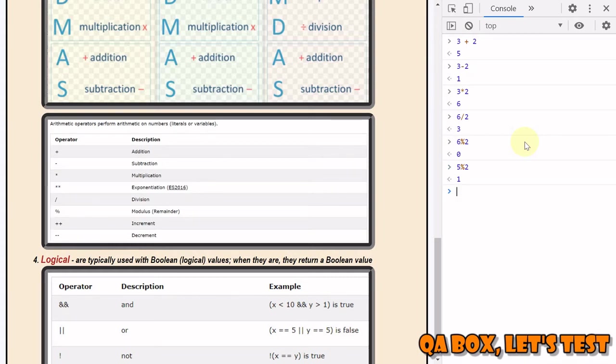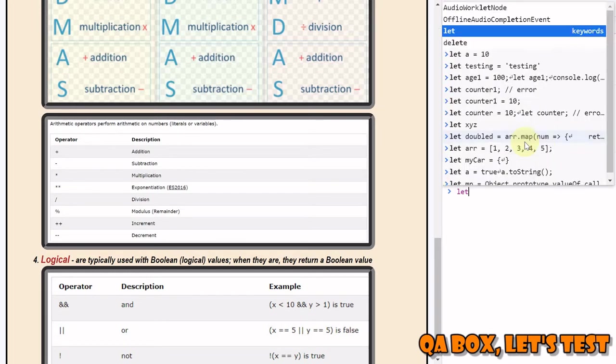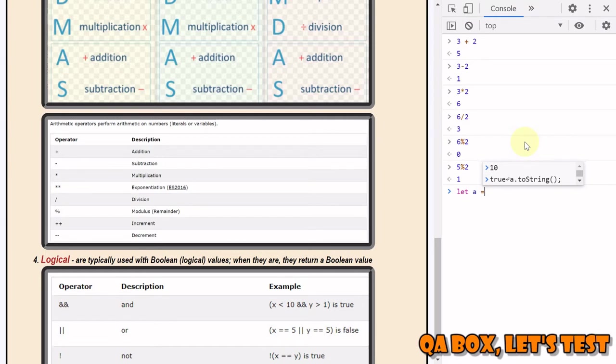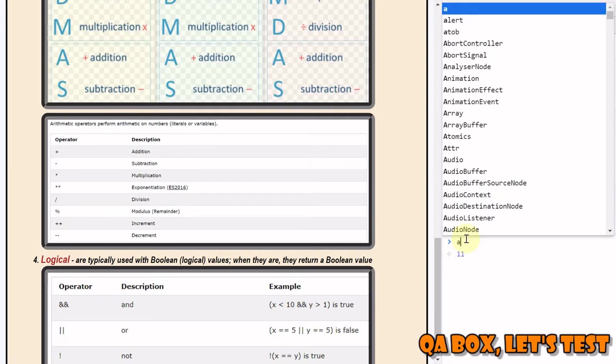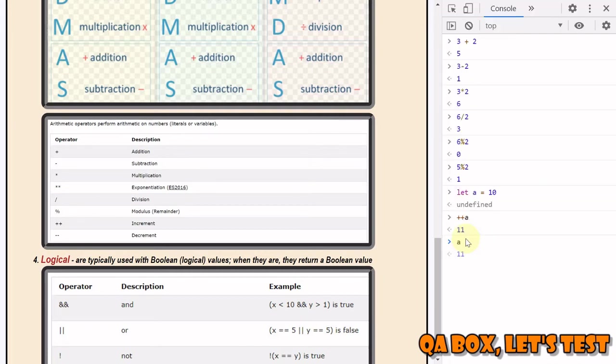There are two more: increment and decrement. Let's say a is equal to 10. There are pre-increment and post-increment. Let's see pre-increment. We get 11, and if I check the value a, it's 11. What happens in the pre-increment is the value is first incremented and assigned back to the variable, and then we get that value.